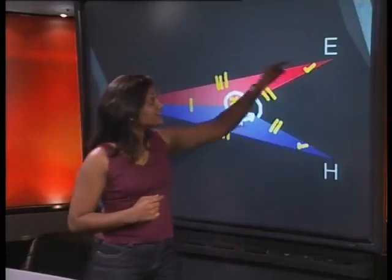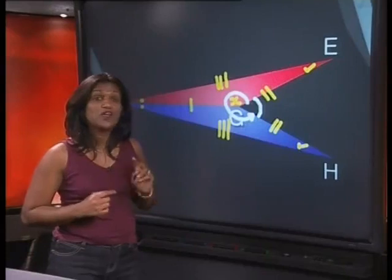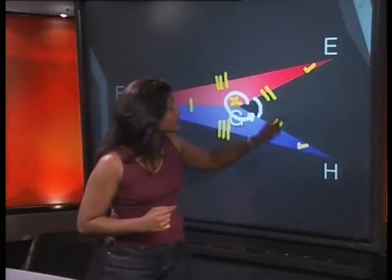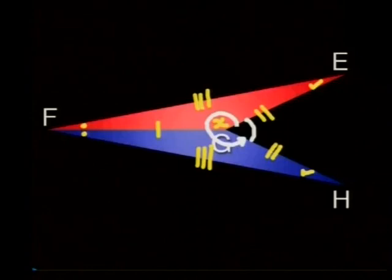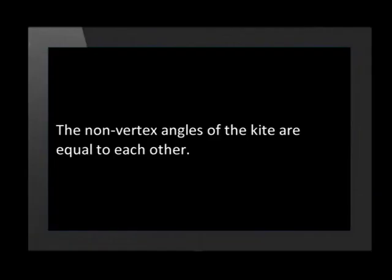Now let's look at these angles. What do we know about these angles? Well, we have marked that these angles are equal to each other. Now how can we describe that in general terms? Well, we can say that the non-vertex angles are equal to one another.